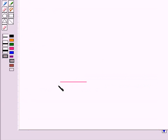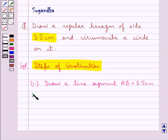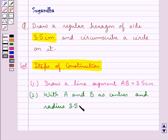We have drawn this line segment AB of measure 3.5 cm. In the next step, with A and B as centers and radius 3.5 cm, draw two arcs which intersect at O.